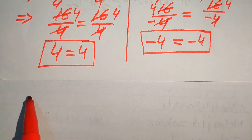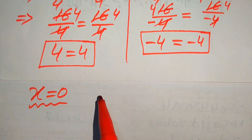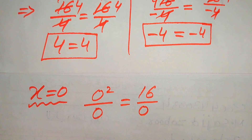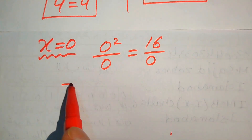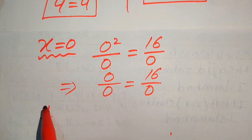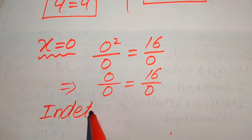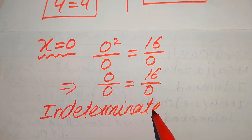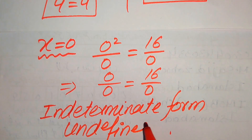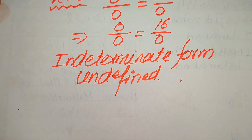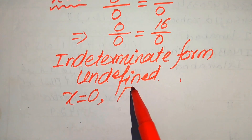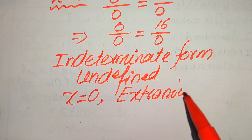Now we verify x equals 0. Substituting gives 0 squared over 0 equals 16 over 0, which becomes 0 over 0 equals 16 over 0. The expression 0 over 0 is an indeterminate form, meaning it is undefined. Since both sides are undefined and not equal, x equals 0 is not a solution — it is the extraneous root of the given equation.